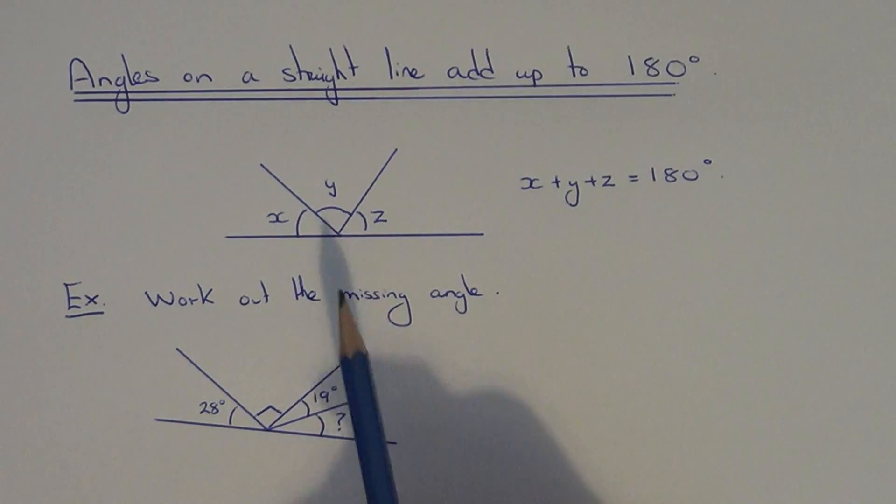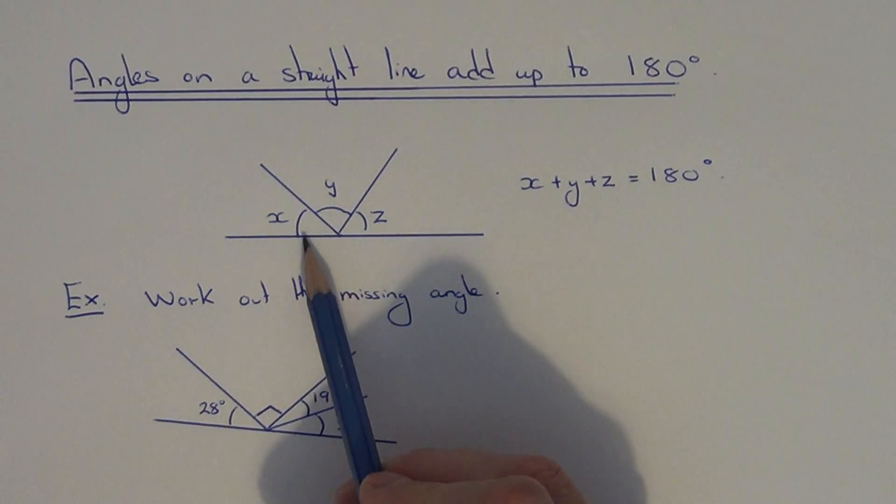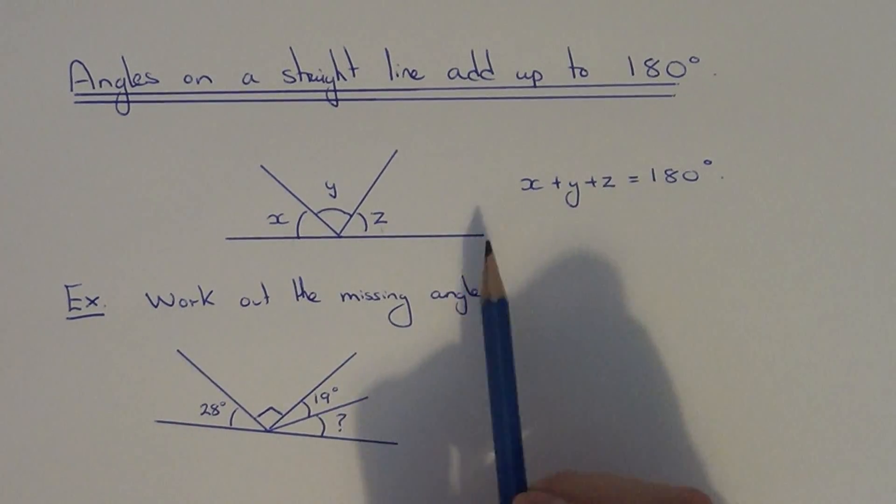If you have some angles which sit on a straight line, then all the angles on that line will add up to 180 degrees.